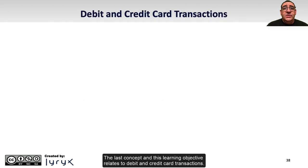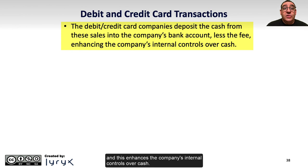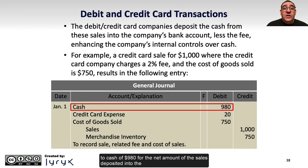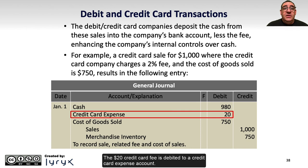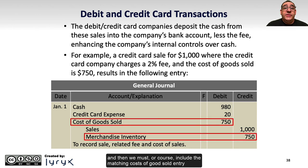The last concept in this learning objective relates to debit and credit card transactions. The debit and credit card companies, usually banks, deposit the cash from debit and credit card sales into the company's account less a fee — often called a discount fee — and this enhances the company's internal controls over cash. For example, a credit card sale for $1,000 where the company charges a fee of 2% and the cost of goods sold is $750 results in a journal entry that includes a debit to cash of $980 for the net amount deposited, calculated as $1,000 less $20. The $20 credit card fee is debited to a credit card expense account, sales of $1,000 are recorded with a credit to the sales account, and the matching entry includes a $750 debit to cost of goods sold and a credit to merchandise inventory.